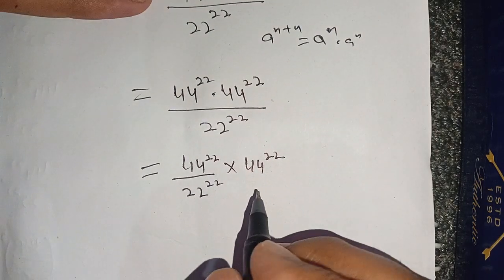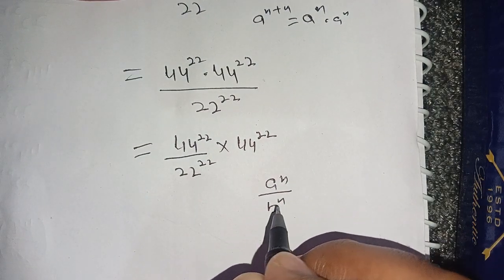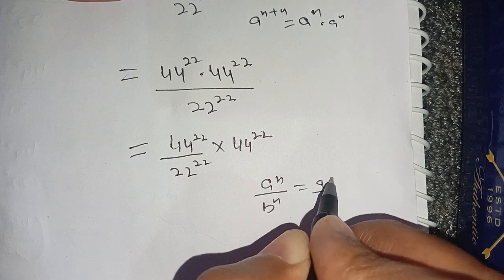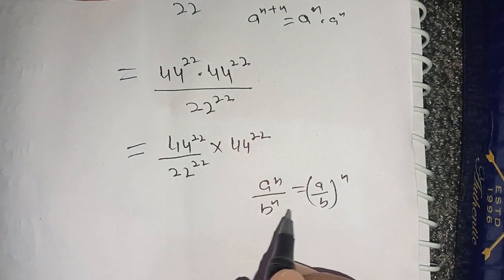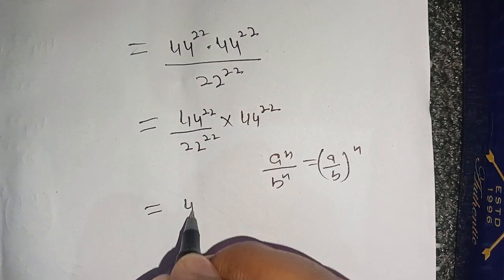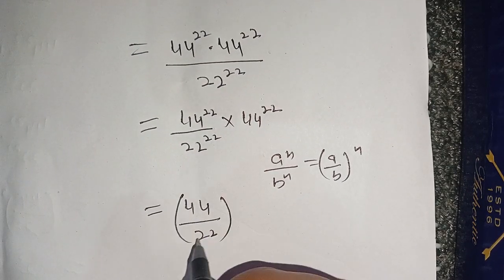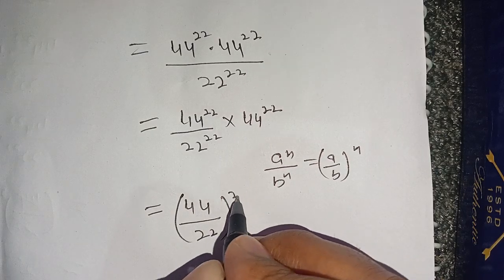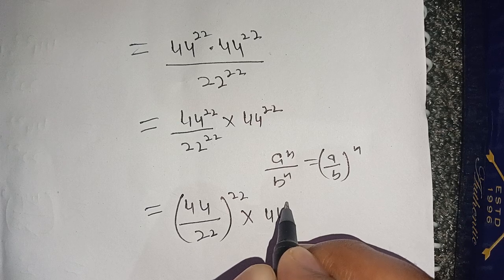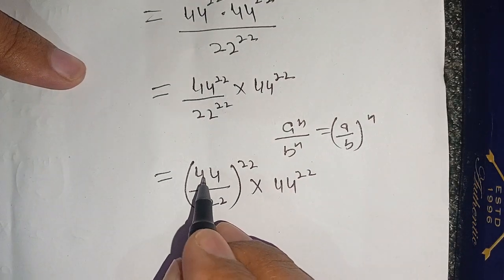Now in the next step, we know that if a raised to power n divided by b raised to power n, then it is equal to a divided by b, whole raised to power n. On using this identity we get 44 divided by 22, whole raised to power 22, times 44 raised to power 22.